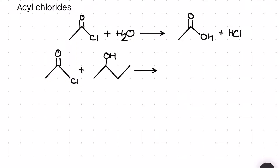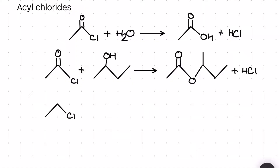For the second reaction, the acyl chloride reacts with an alcohol to produce an ester — this is the third way to make an ester we've seen. They are a very popular functional group. We also make some HCl alongside the ester.